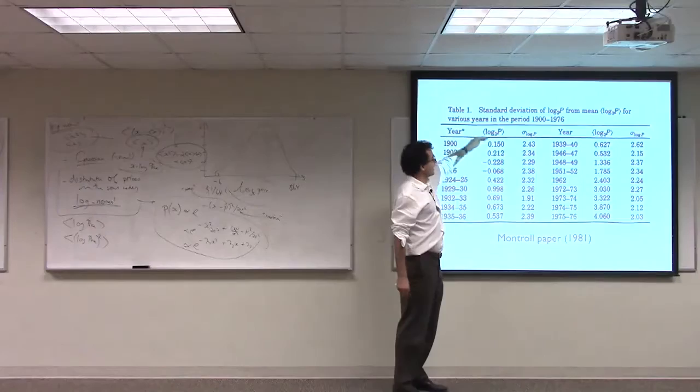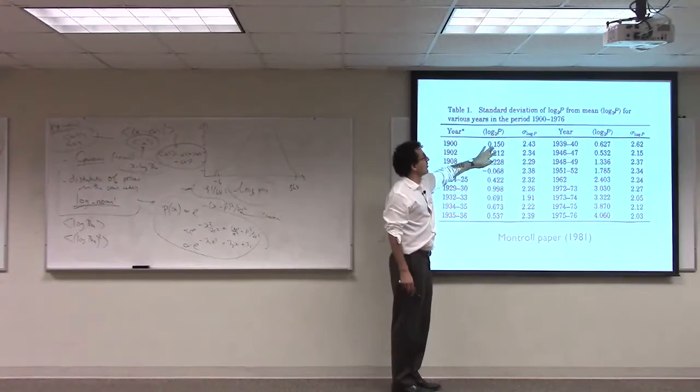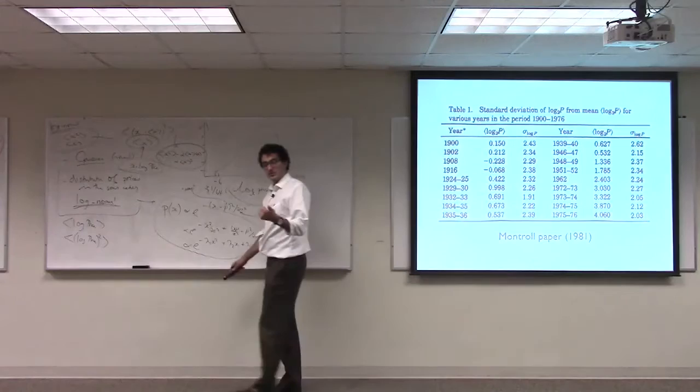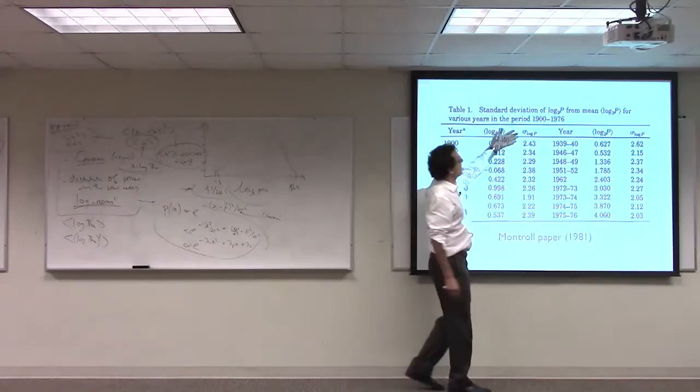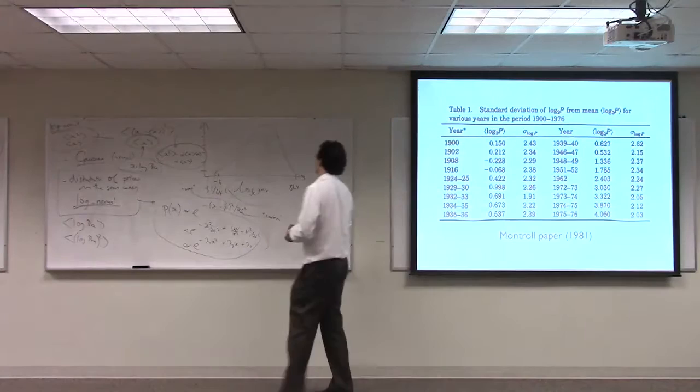Enormous economic change. So certainly the overall prices have gone up. They go from 0.1 in log price space to 4. In other words, prices increase by a factor of what? 2, 4, 8, 16. By a factor of 16. The variance of the log of the prices stays almost constant. It's roughly a factor of 2.